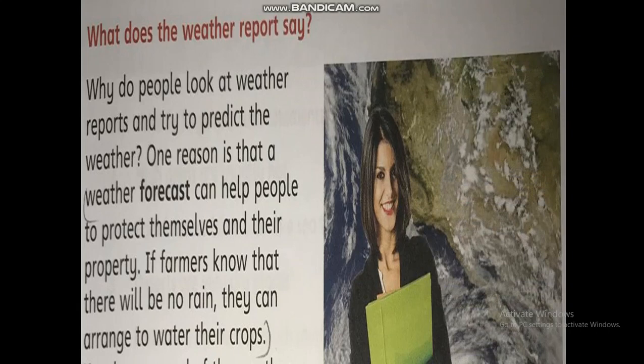What does the weather report say? Why do people look at the weather report and try to predict the weather? One reason is that weather forecasts can help people to protect themselves and their property. If farmers know that there will be no rain, they can arrange to water their crops. Weather forecasts are important for farmers as they inform them about upcoming rains. Government agencies can make plans in case of cyclones and flooding.